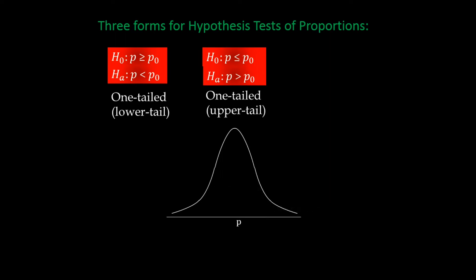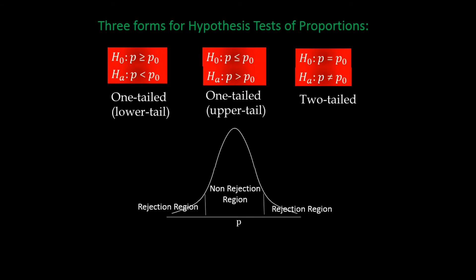The third form our hypothesis can take uses equal-to and not-equal-to signs in the hypotheses. This form is called a two-tailed test, since there are two tails of rejection on the distribution. In this case, we are concerned with both tail areas — if the test statistic is too far above or too far below the hypothesized proportion. Note that we substitute p for mu in the hypotheses because we are now testing for the population proportion instead of the population mean.